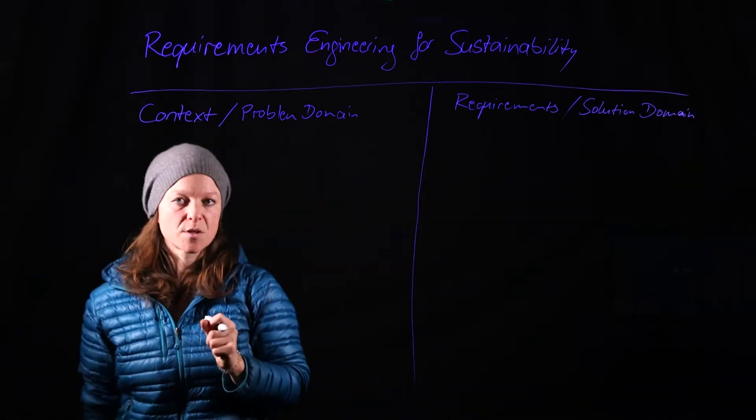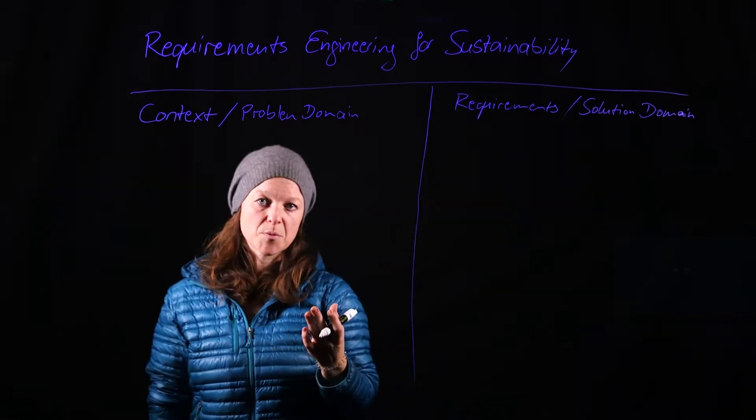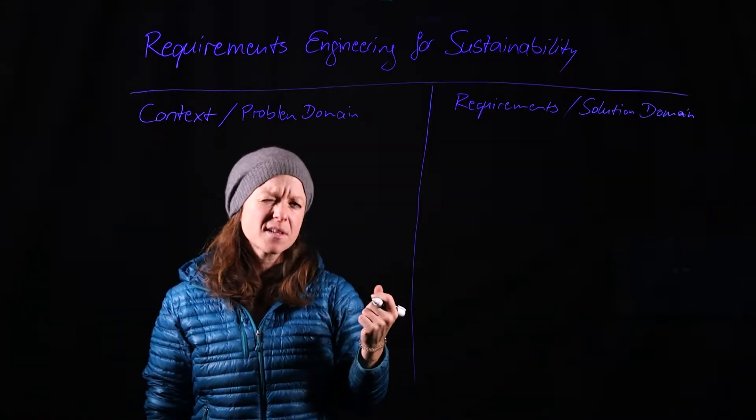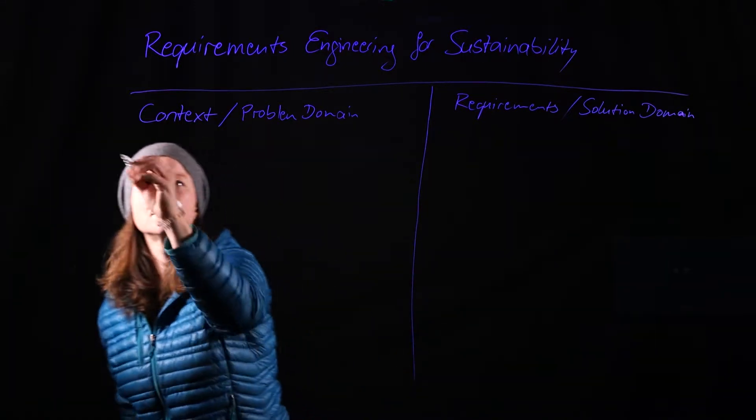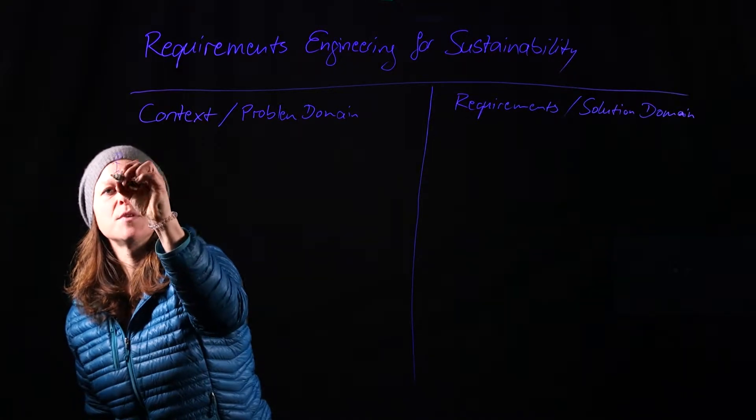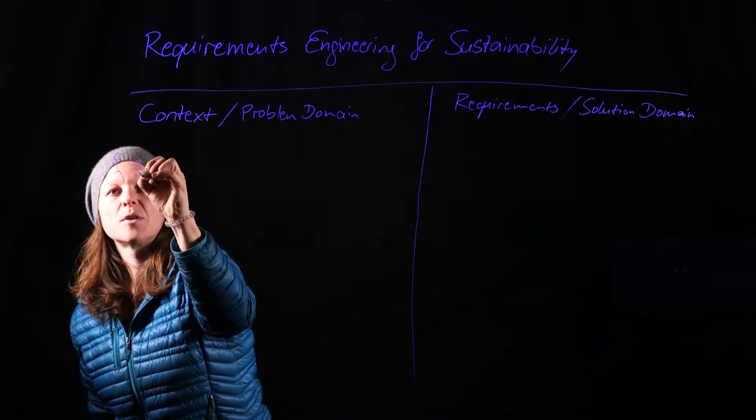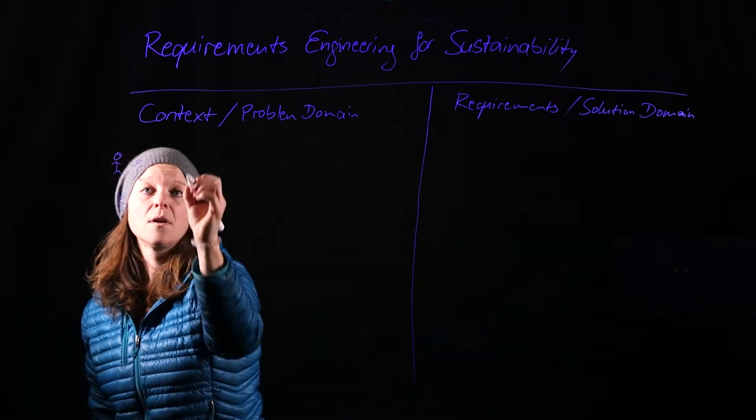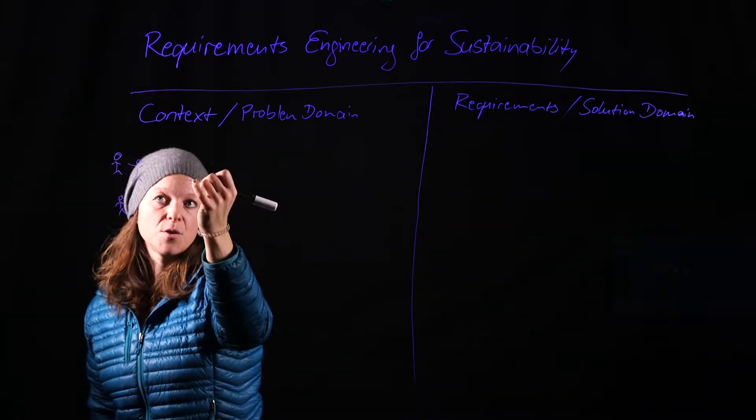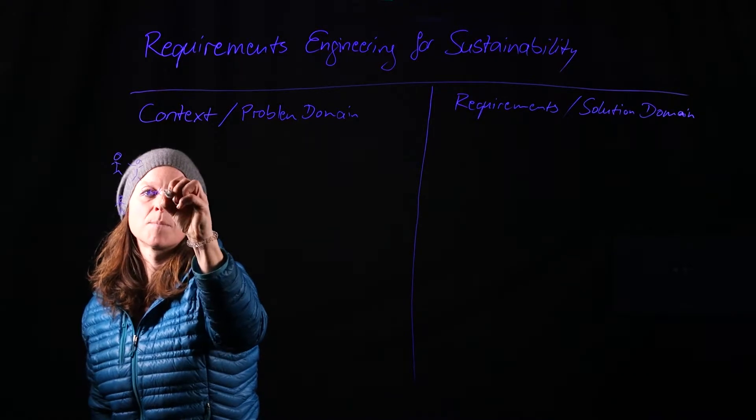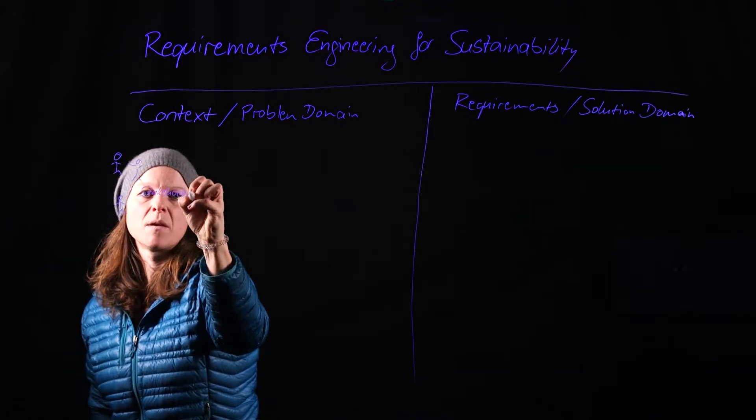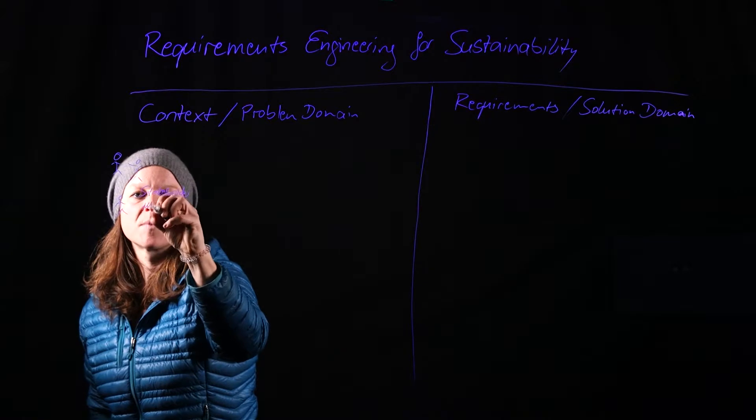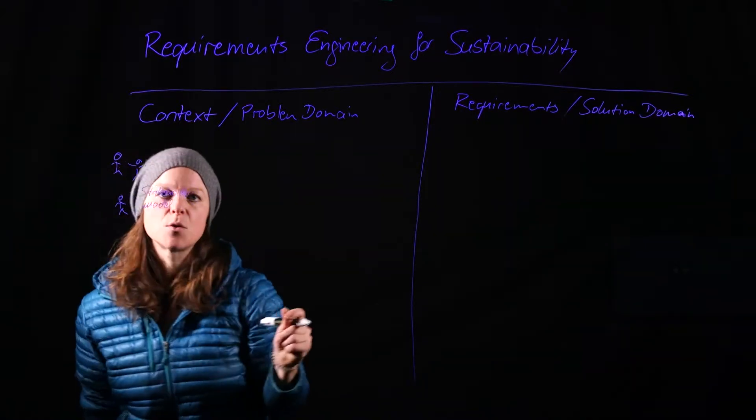For getting started with the context, with the problem domain, I first need to understand who are the stakeholders that I need to go talk to. So at the very beginning of our requirements engineering is find out who your stakeholders are, who are the people that you are going to need to talk to. And we will document that in a stakeholder model.